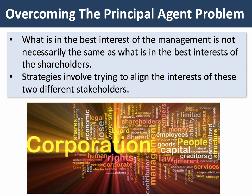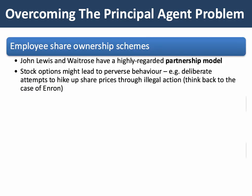So what can we do to overcome the principal-agent problem? Management may want to maximize the firm's turnover or sales instead of profit. What can owners do to align the motives of shareholders and managers — to encourage managers to move back towards profit maximization? Here are three possibilities to focus on.